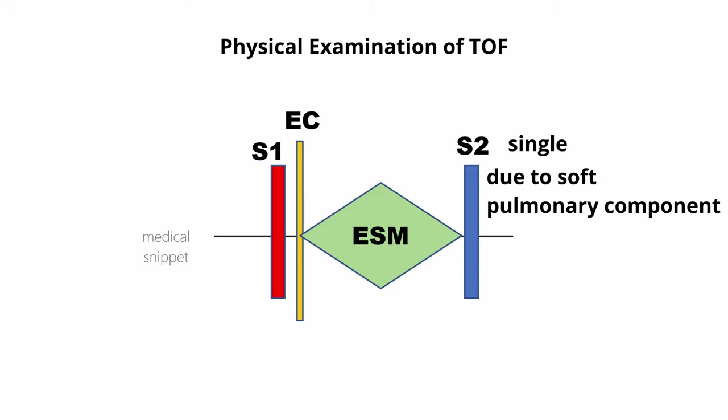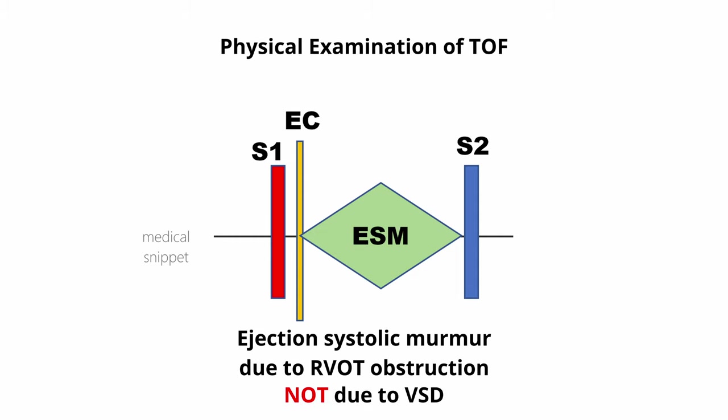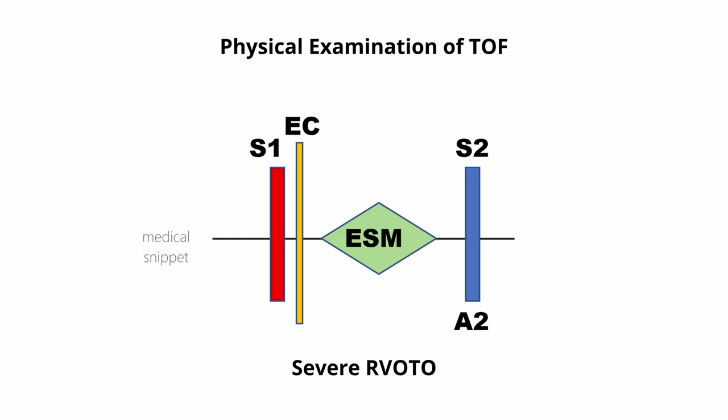An ejection click may be audible due to the dilated aorta, as both RV and LV eject blood into the aorta. The ejection systolic murmur in TOF is due to the RVOT obstruction and not due to the VSD. The murmur is a crescendo-decrescendo type, best heard in the left parasternal region. As the RVOT obstruction increases, the murmur becomes softer and shorter — the opposite of the murmur in isolated pulmonary valve stenosis.